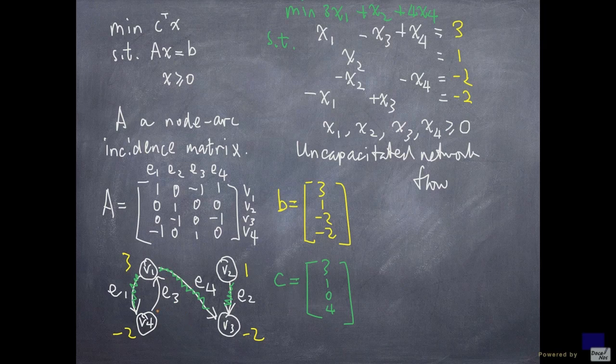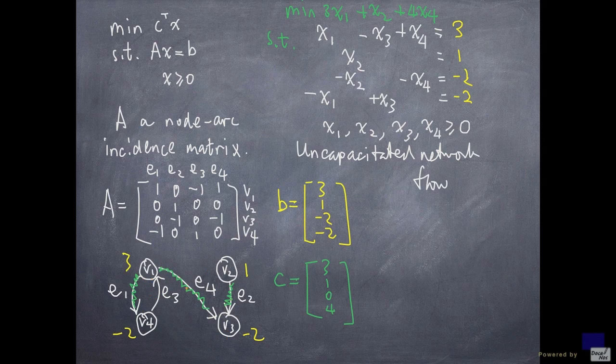So in this case, I'm choosing e1, e2, and e4. Clearly there's no loop formed from these green arcs.